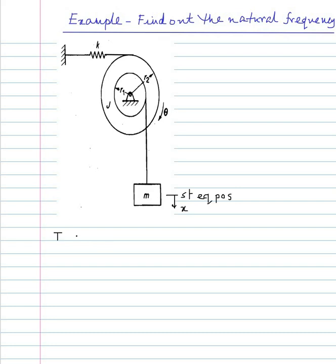Now calculate the kinetic energy T. One term is half m x-dot squared, and x-dot equals r1 times theta-dot, giving half m r1 squared theta-dot squared. The other term is the rotational kinetic energy of the stepped disc, and since J is the mass moment of inertia about the axis passing through that point, it is half J theta-dot squared.